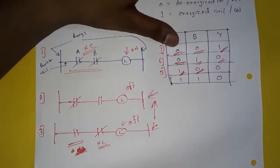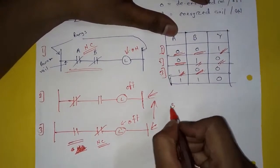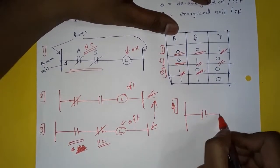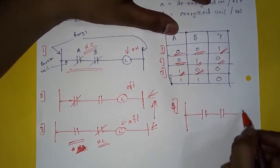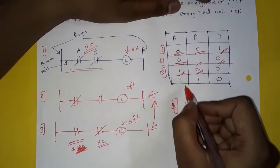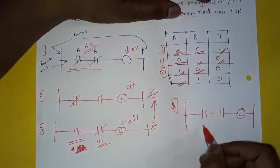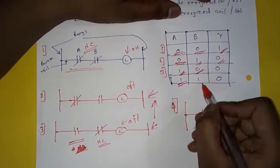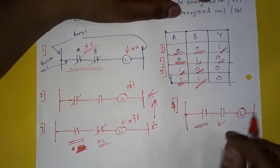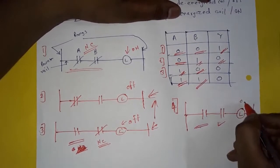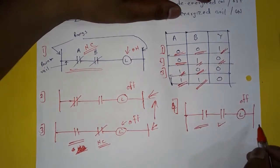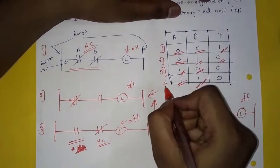In the fourth condition, A is energized so its contacts get opened. B is also energized so its contacts also get opened. Both contacts are open, so the lamp will remain off — it will not glow. This is our fourth condition.